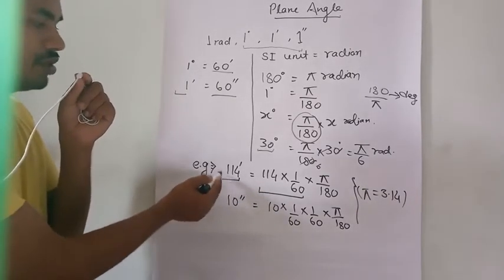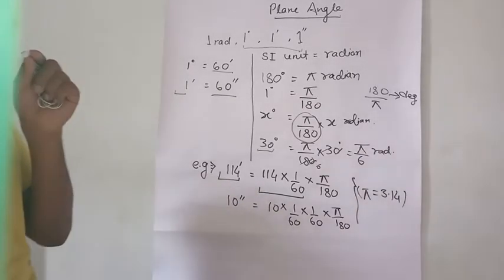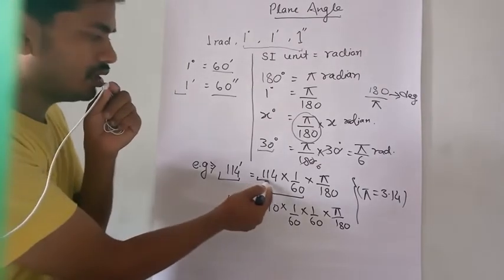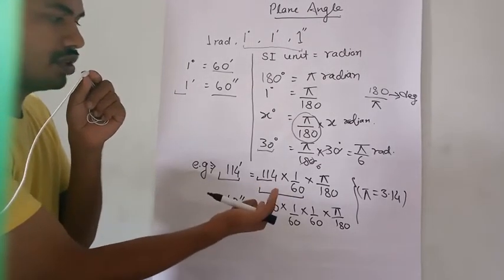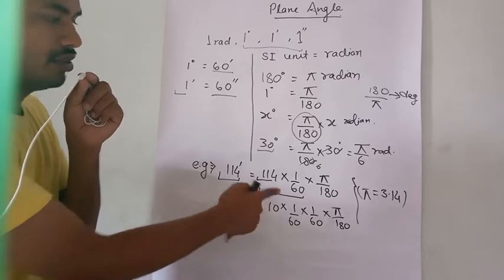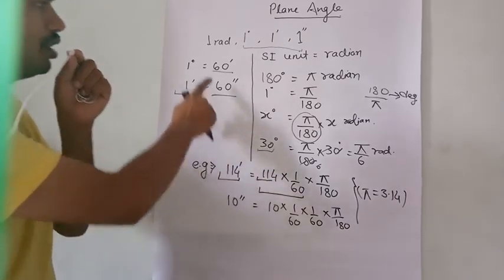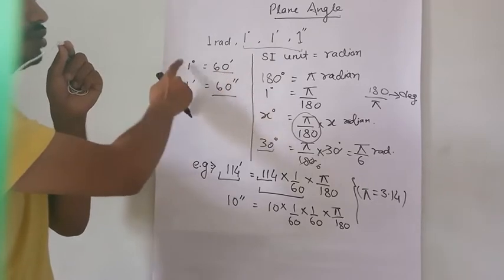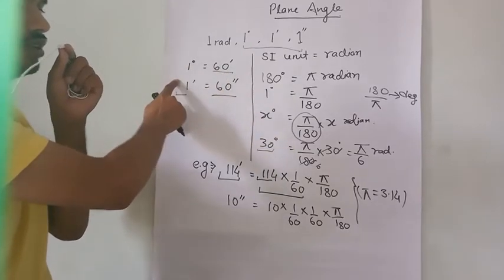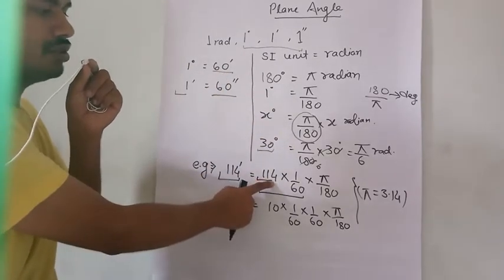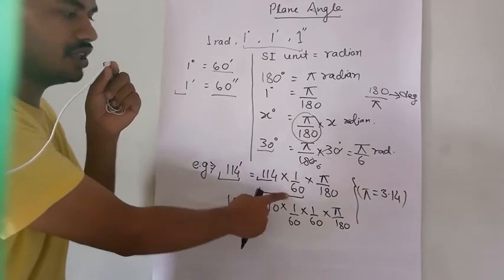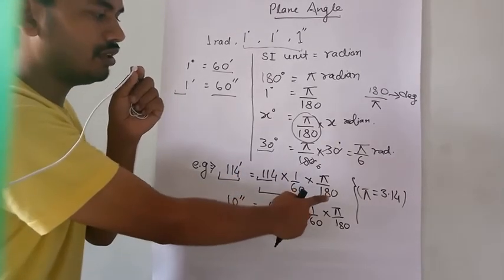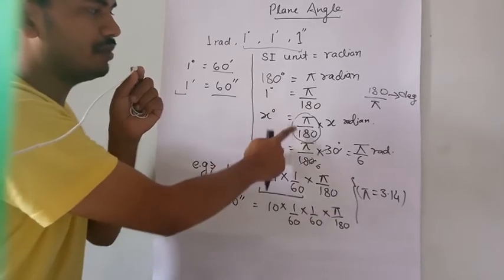I have taken an example from your textbook: 114 minutes. We have to convert 114 minutes first into degrees. We divide by 60 because one degree is equal to 60 minutes, so one minute equals one by 60 degree. Therefore, 114 minutes equals 114 into one by 60 degree, and then we convert this degree into radian by multiplying by pi by 180.